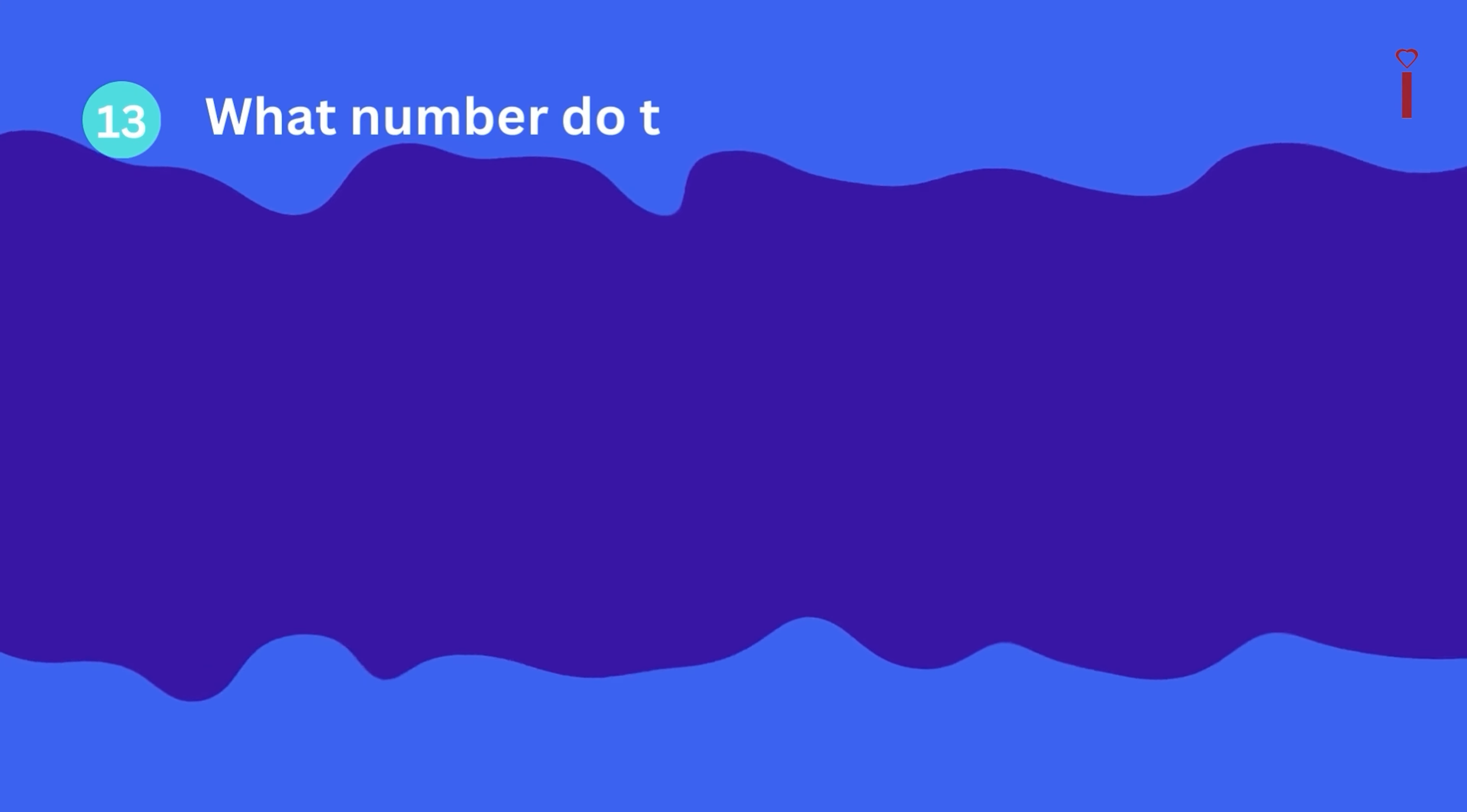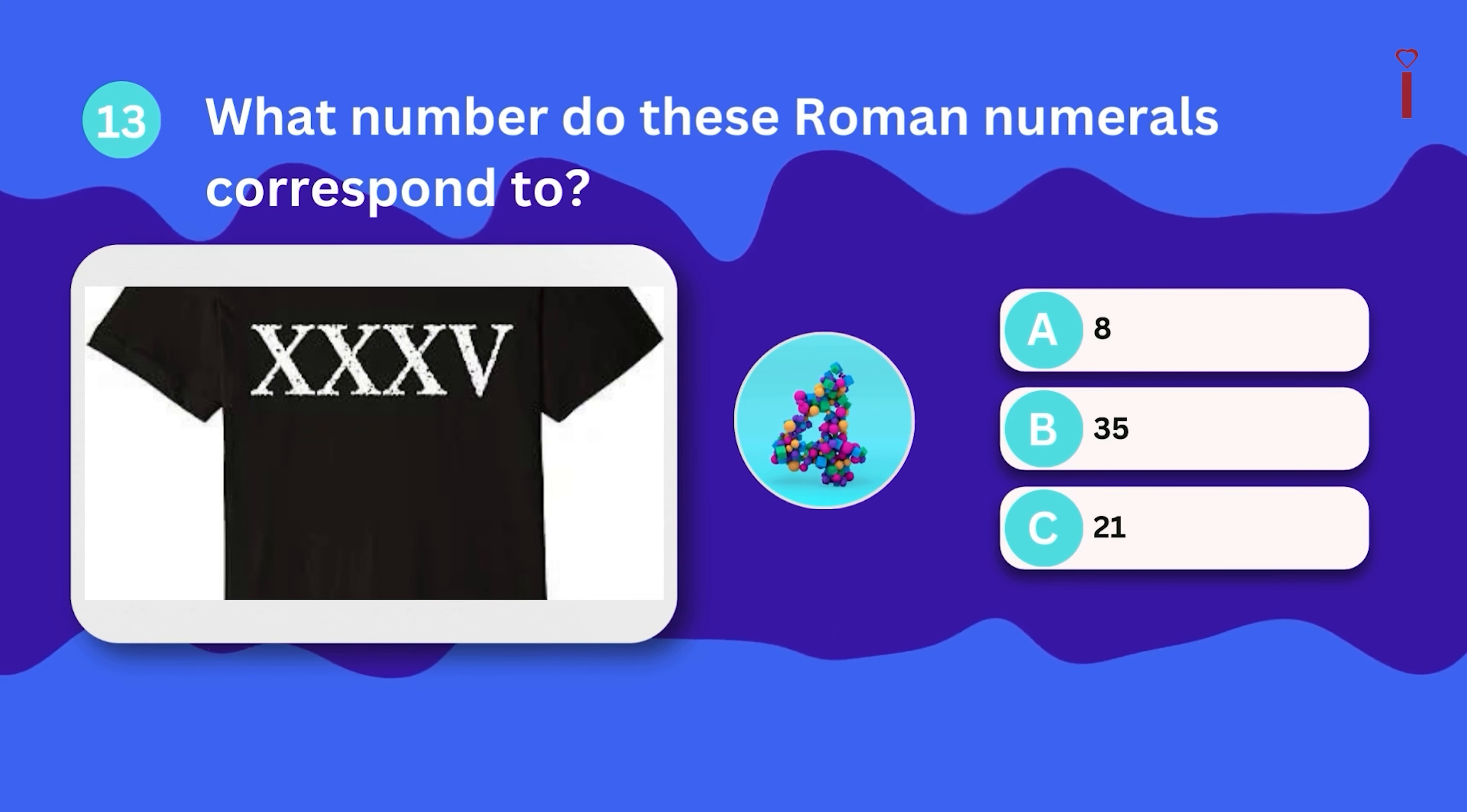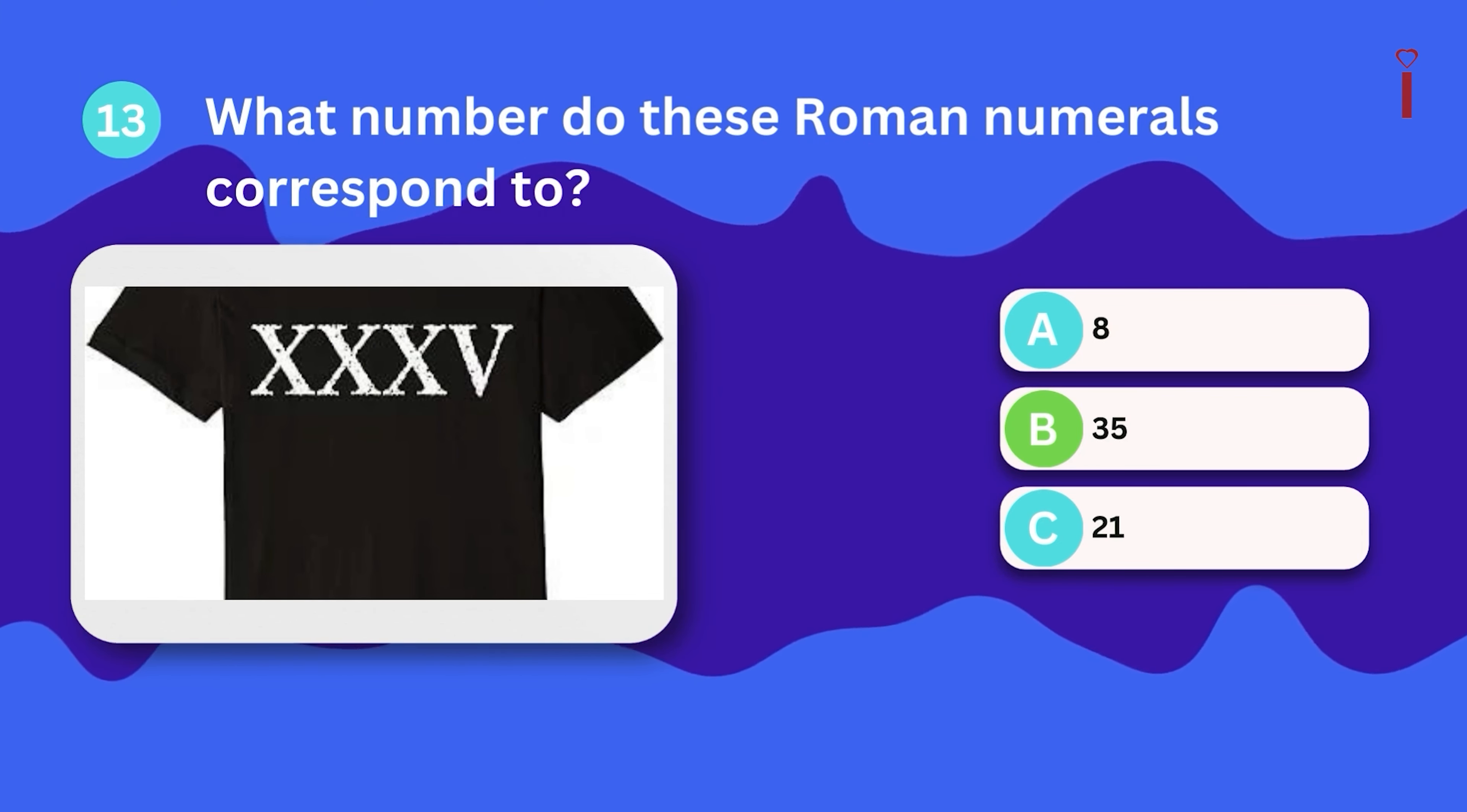Question number thirteen. What number do these Roman numerals correspond to? Eight, thirty-five, or twenty-one? The correct answer is thirty-five.